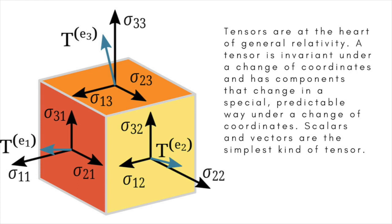In 1913, Einstein and Grossmann jointly published a paper in which they used the tensor calculus of Ricci-Cabastro and Levi-Civita to portray gravity in terms of a metric tensor — a tensor that gives a generalized way of measuring distance. But their theory was still far from complete.